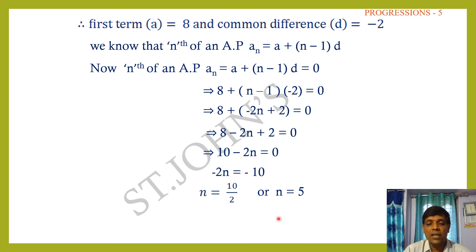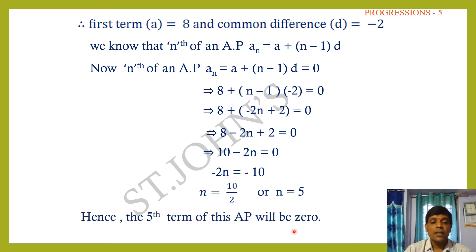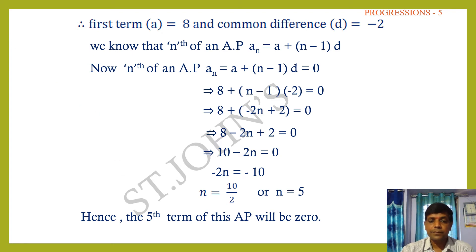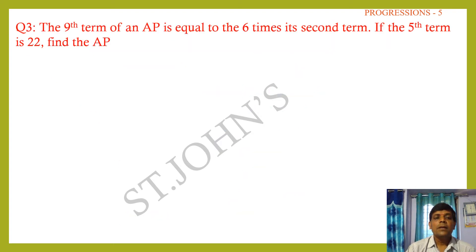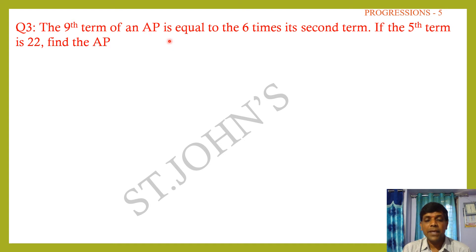Now find d: from 2d = 5a, substitute a = 2: 2d = 10, so d = 5. First term a = 2, common difference d = 5.